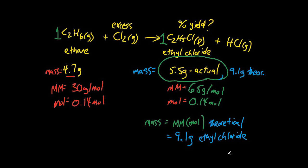So there's actually 2 masses here in our mass, molar mass, mole table. The 9.1 grams that we determined from the fact that we should have obtained 0.14 moles of ethyl chloride, and then the 5.5 which is the actual that they gave us.